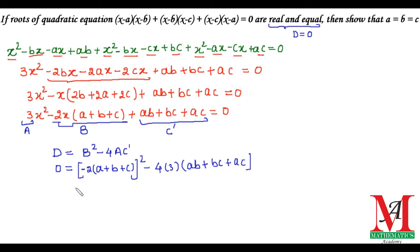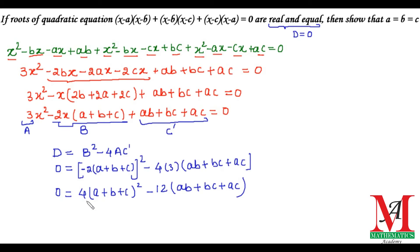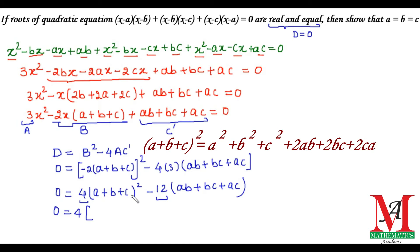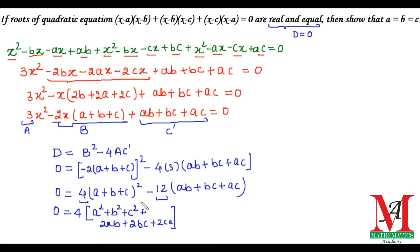The square of minus 2 gives 4, so we have 4(a plus b plus c) whole squared minus 12(ab plus bc plus ac) equals zero. Taking 4 as common from both terms, we get 4 times [(a plus b plus c) whole squared minus 3(ab plus bc plus ac)] equals zero. Expanding (a plus b plus c) whole squared gives a squared plus b squared plus c squared plus 2ab plus 2bc plus 2ca.